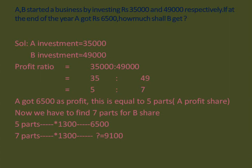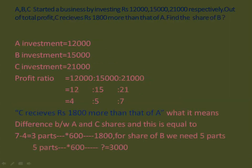Now let us see another problem. A, B, and C started a business by investing rupees 12,000, 15,000, and 21,000 respectively. Out of total profit, C receives 1,800 more than that of A. Find the share of B. In this problem only investments are given and there is no mention of period, so we take it as one year. To find the share of B we need the profit ratio of A, B, and C, which equals the investment ratio: 12,000 is to 15,000 is to 21,000. Upon cancellation we get 4 is to 5 is to 7.